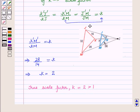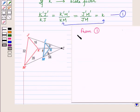Now we can find the values of x and y using this equation. Let it be equation 1. Now from equation 1 we have K'J'/KJ is equal to k.